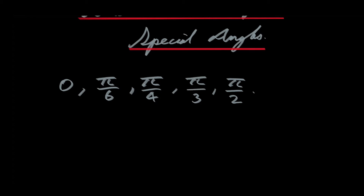Typically in a textbook, pi does not get included as one of the special angles. Maybe that's because pi radians, which is 180 degrees, could never be the size of one of the angles of a triangle, because the sum of the three angles of any triangle must add to 180 degrees, which is just pi radians.